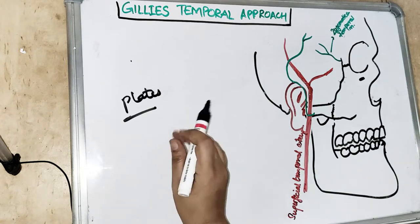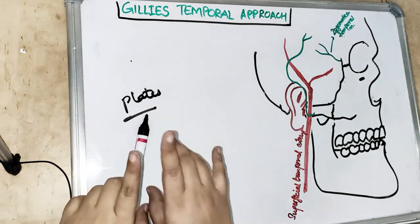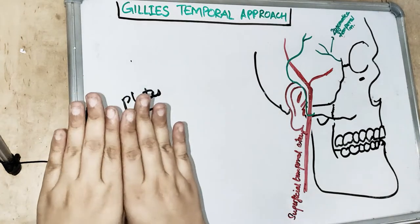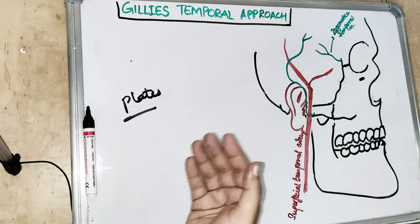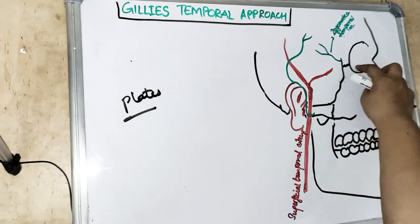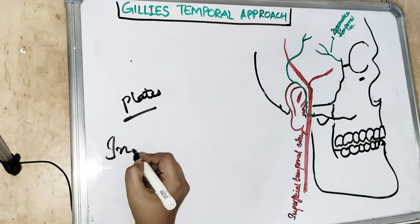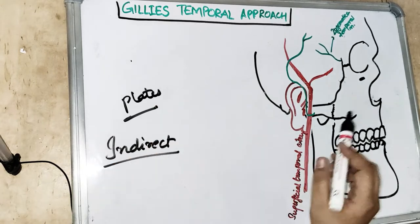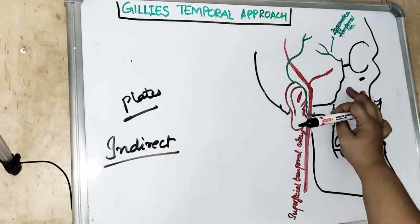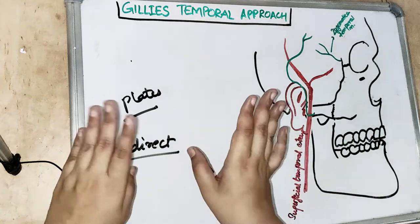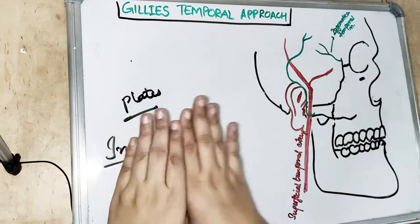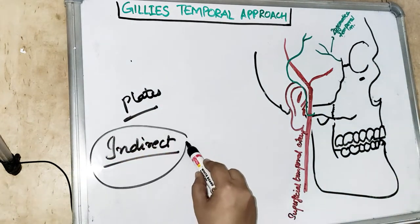We can go for indirect reduction, but if there is displacement at the frontozygomatic suture, we must go for open reduction and internal fixation. If there is no displacement, we can use indirect reduction. If the fracture is non-comminuted with no orbital involvement, or if it is an isolated zygomatic arch fracture with no orbital fracture, we can go for indirect reduction, because the temporal fascia keeps the arch in its proper position.